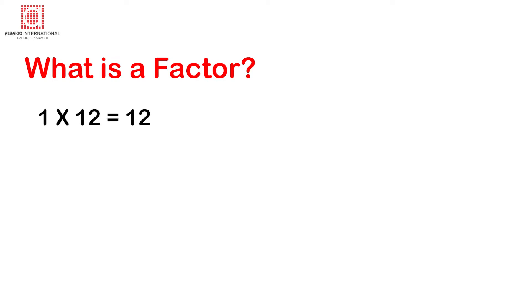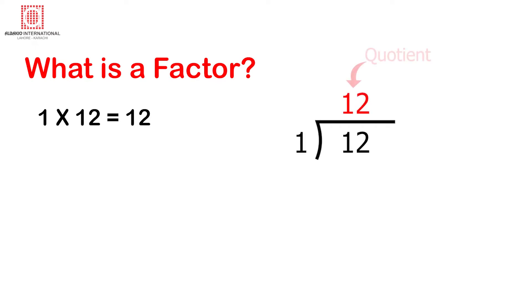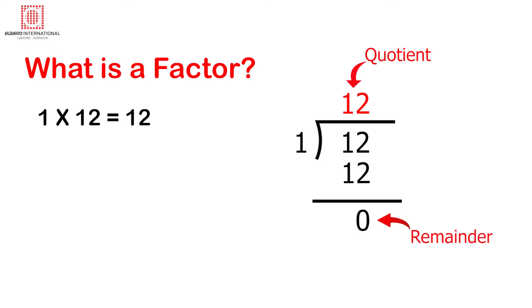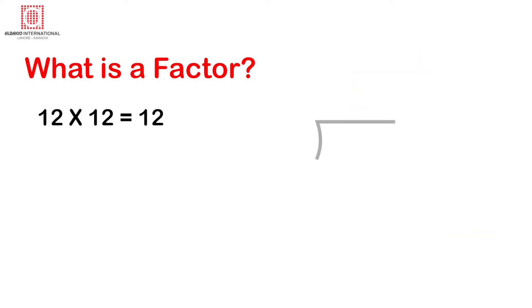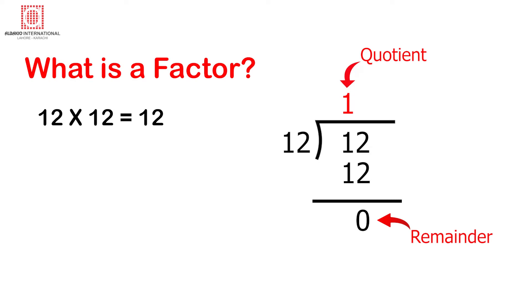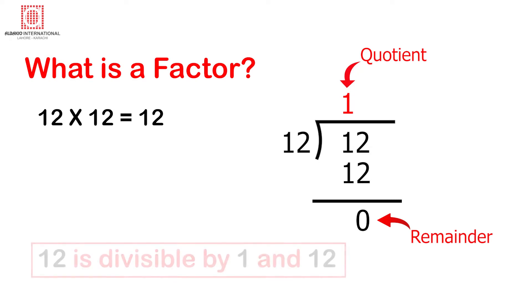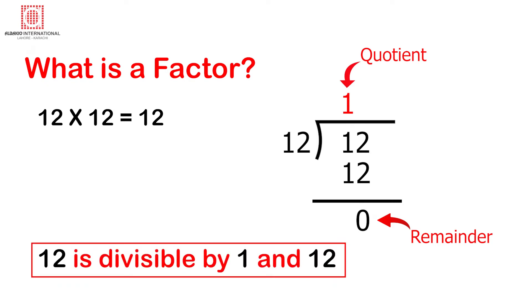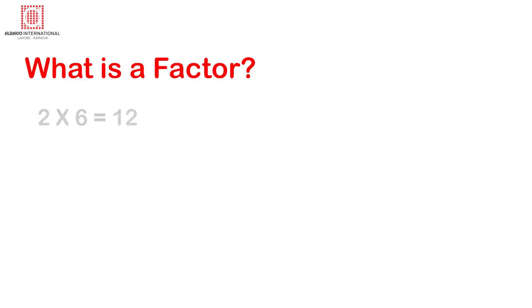Let's take each number pair separately. Pair 1: 1 × 12 = 12. If we divide 12 by 1, the quotient is 12 and the remainder is 0. If we divide 12 by 12, the quotient is 1 and the remainder is 0. In both cases the remainder is 0, meaning 12 is divisible by 1 and 12. Pair 2: 2 × 6 = 12.